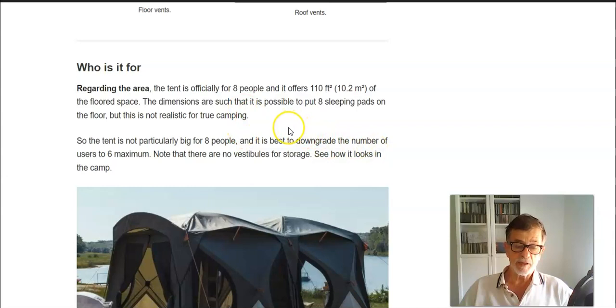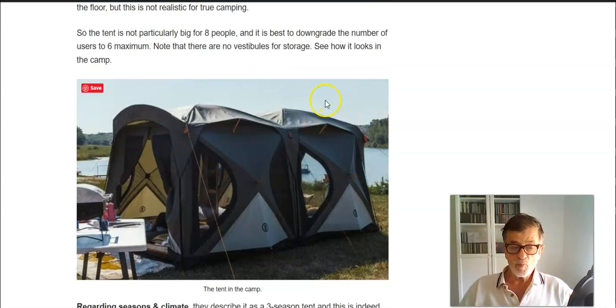But for real family camping, it's best to reduce it to let's say maximum six. So it would be one room for parents and then the other for kids - let's say two to four kids can fit inside.